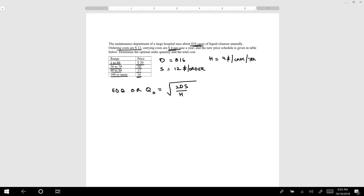We can substitute those values. So, Q optimal equals the square root of 2 times D, which is 816, multiplied by S, which is 12, divided by 4. This is going to be 69.97, so I will round it off to 70 cases.